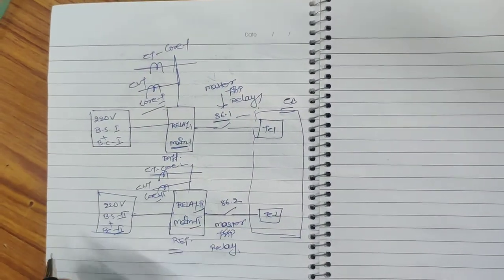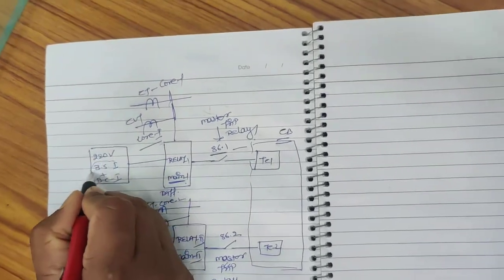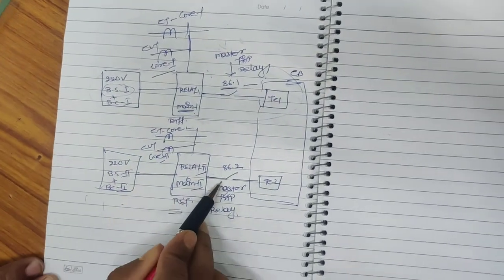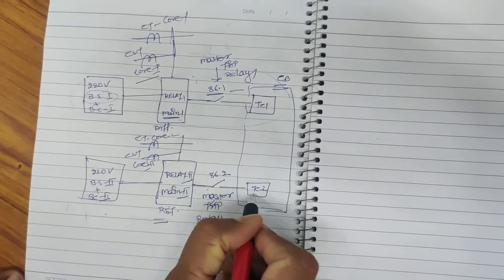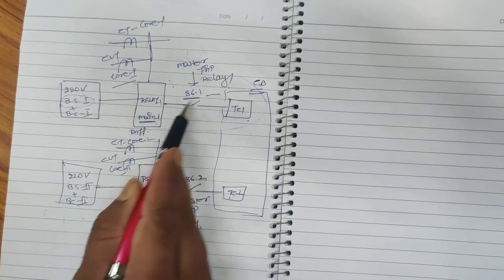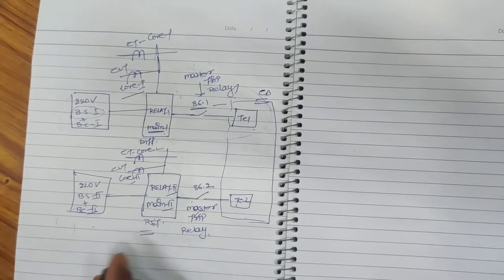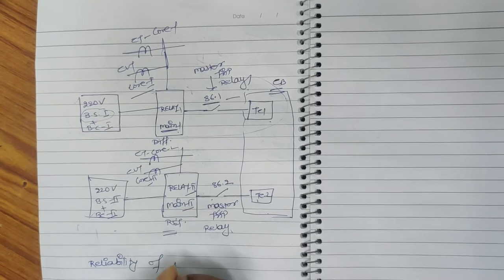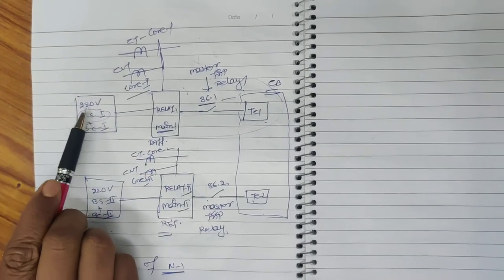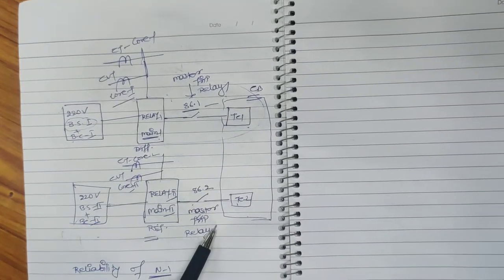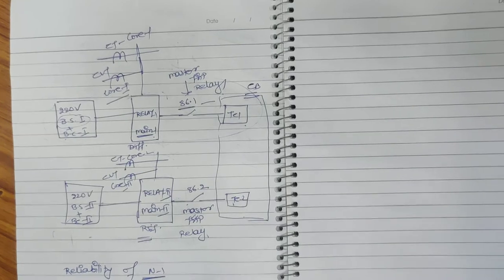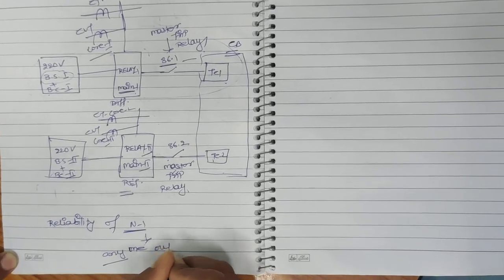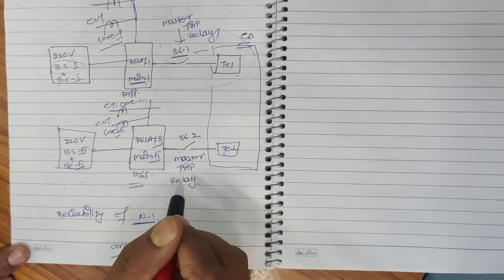If we count the elements in this protection scheme, we have approximately 14 elements in total — including battery systems, relays, master trip relays, trip coils, CT cores, and CVT cores. If there is a failure of any one element out of these 14, the fault will still be isolated. For example, if Battery System 1 fails, the fault will be cleared through Battery Set 2, Relay 2, 86.2, and Trip Coil 2. If Trip Coil 2 fails, the fault will be cleared through Trip Coil 1. If 86.1 fails, the other path will clear the fault. This is the N-1 reliability criterion — out of N elements, failure of any one element will not prevent fault clearance.